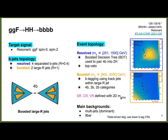For the 4b channel from ggF production, the analysis searches for resonant signals for both spin-0 and spin-2 particles. A key feature is sensitivity to extremely massive resonant signals of order 1 TeV, where Higgs bosons are boosted and the decayed b-jets form large-radius jets. The analysis studies different b-jet topologies: a resolved channel with four small-radius b-jets for masses below 1.5 TeV, and a boosted channel with two large-radius jets. BDT training is used to pair b-quarks into Higgs candidates.